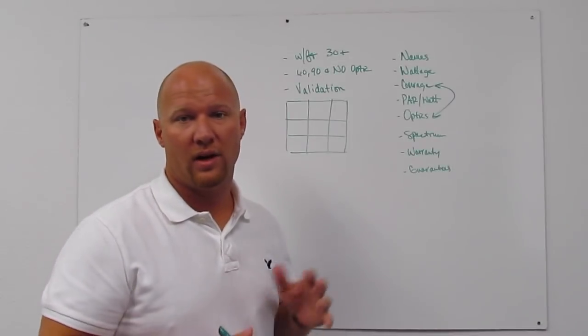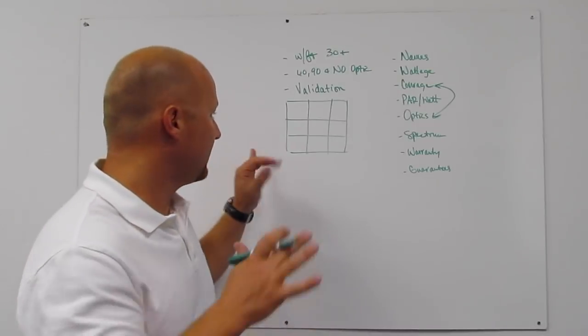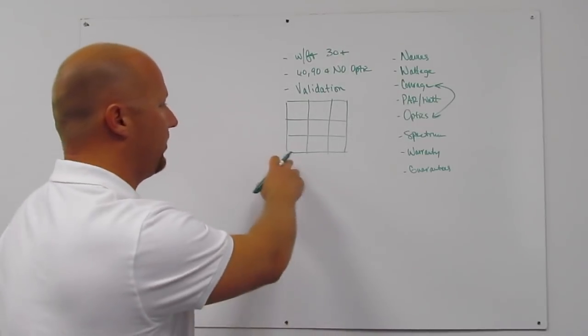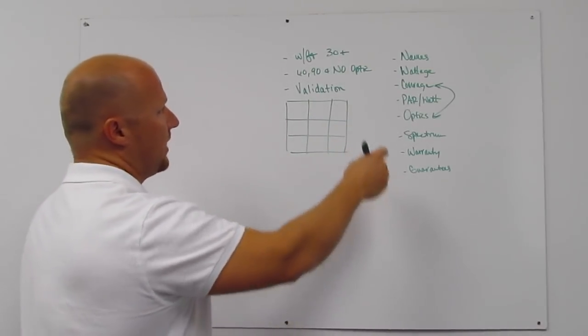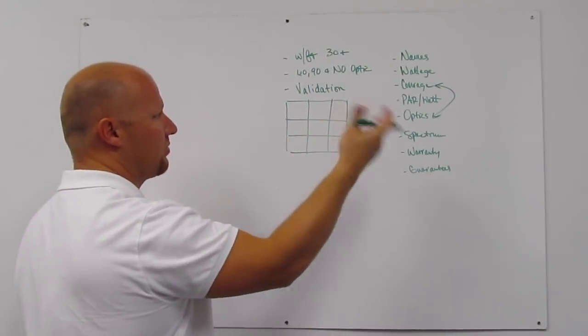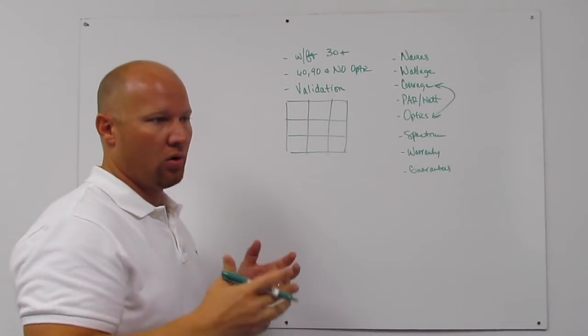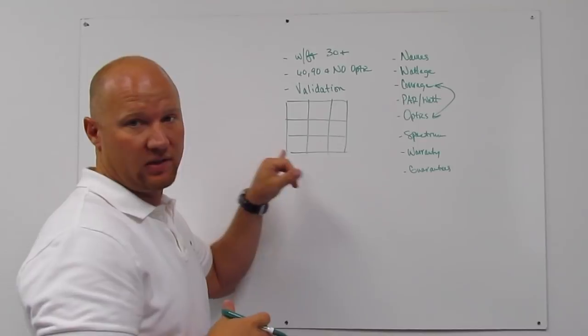The big thing you need to start with first is watts per foot to get the total wattage that you need for the space. So let's just use this example. We have a 3 foot by 3 foot space and we need 30 plus watts per foot. So that's 270 watts, let's round it up to 300 watts. So first you're going to be out there looking for a 300 or more watt LED to cover this space.